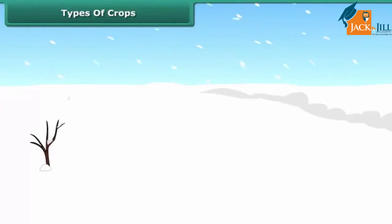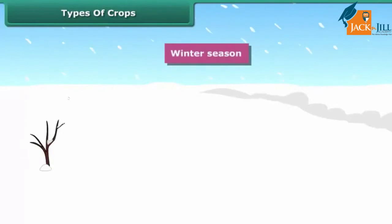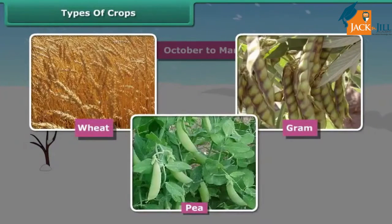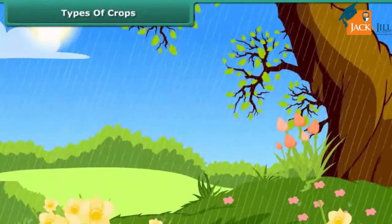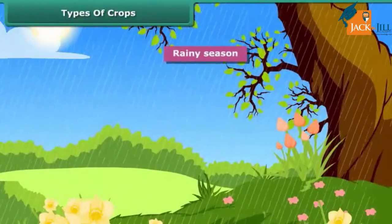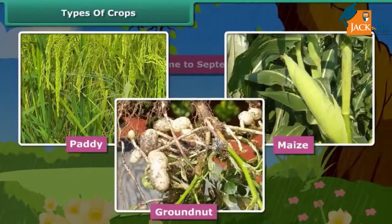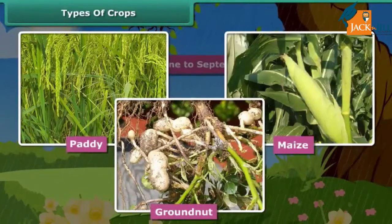Rabi crops are usually grown in the winter season, from October to March. Wheat, gram and peas are examples of Rabi crops. Kharif crops are usually sown in the rainy season, generally from June to September. Paddy, maize, groundnut, etc. are some common examples of Kharif crops. To grow crops, various activities are performed, which are known as agricultural practices.